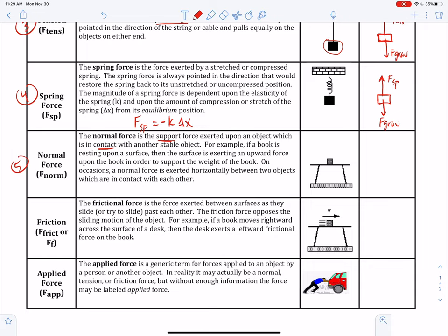For example, if a book is resting upon a surface, then the surface is exerting an upward force upon the book in order to support the weight of the book. On occasions, a normal force is exerted horizontally between two objects which are in contact with each other. Like, if you took the book and you push it against the wall, now the wall would be exerting a horizontal force. By the way, the word normal in geometry means perpendicular. So that's what's so normal about a normal force.